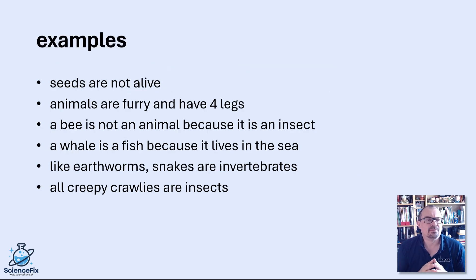So examples of misconceptions that children have: they think that seeds aren't alive, they think that all animals are furry and have four legs, they think that a bee is not an animal because it's an insect, they don't see insects as being animals, that a whale is a fish because it lives in the sea, they think that because snakes look like earthworms they're also invertebrates, that all creepy crawlies are insects.